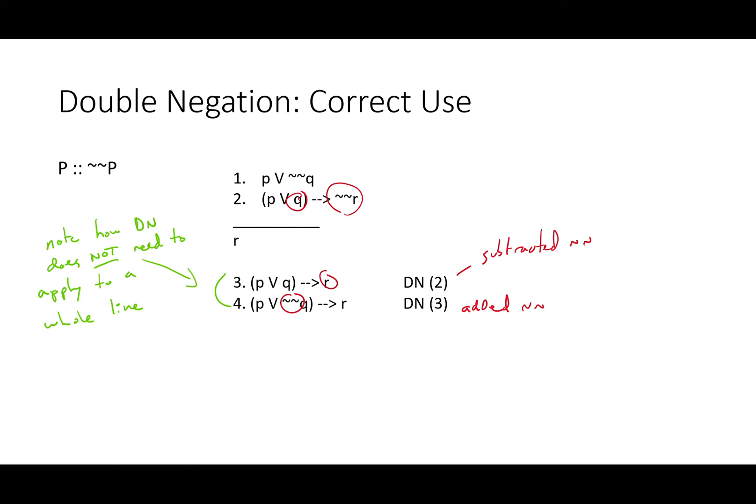Once again, note that it doesn't have to apply to a whole line to be logically equivalent. Now that our antecedent matches line four, we can do modus ponens. And that leaves us with R.